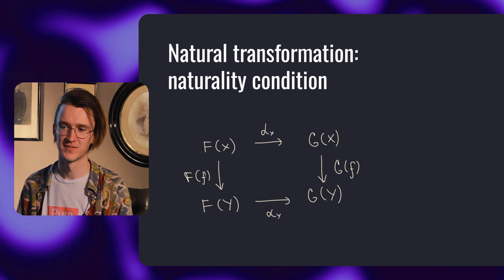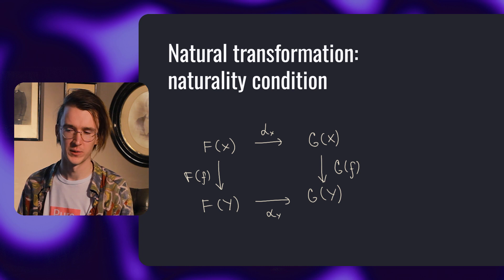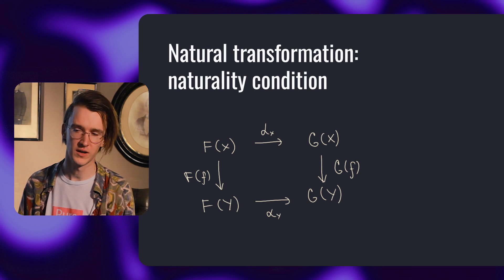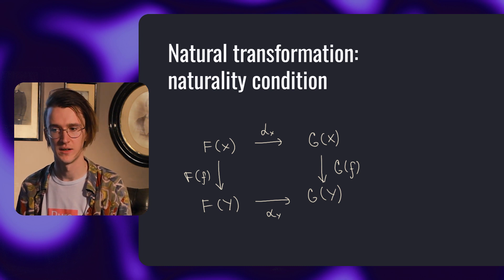Alpha X from F to G of D. For every morphism F from X to Y in C, we have the naturality condition: G of F composed with alpha X equals alpha Y composed with F of F. If the diagram commutes, the condition is satisfied.